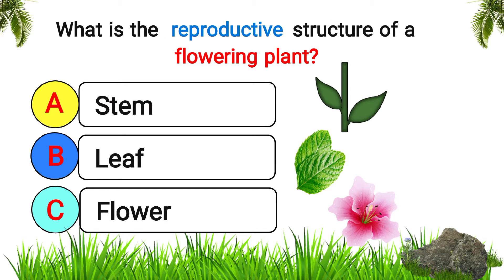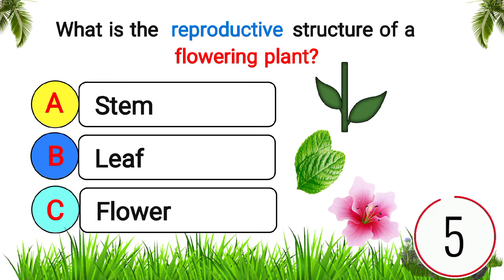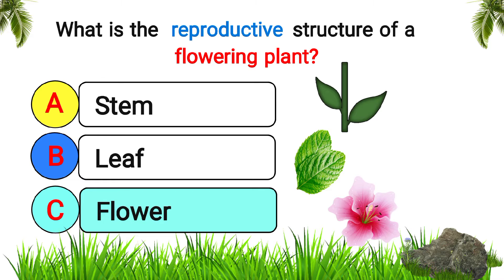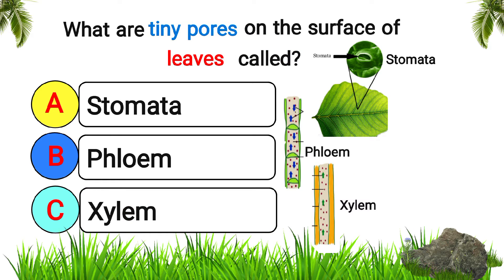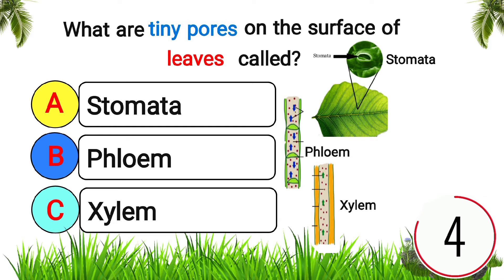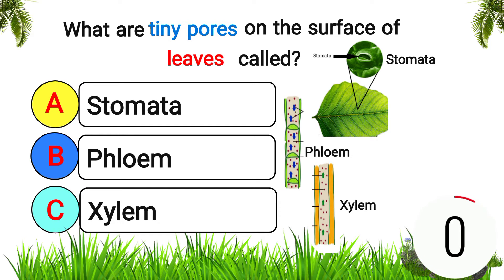What is the reproductive structure of a flowering plant? Answer: flower. What are tiny pores on the surface of leaves called? Answer: stomata.